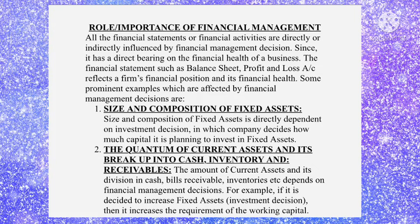The first example is the size and composition of fixed assets. The size and composition of fixed assets is directly dependent on investment decisions, in which the company decides how much capital it is planning to invest in fixed assets. There should be proper planning on how much you want to invest, and all these things should be done in a very planned manner.